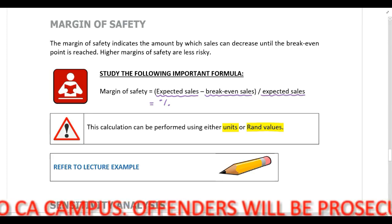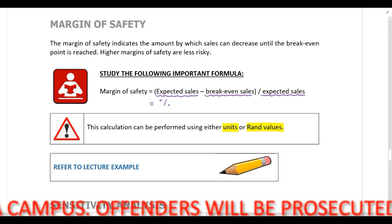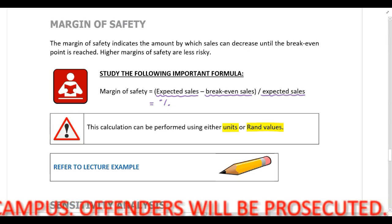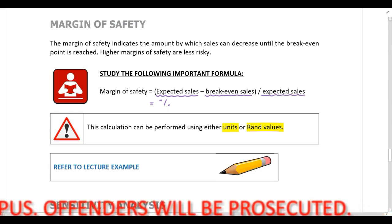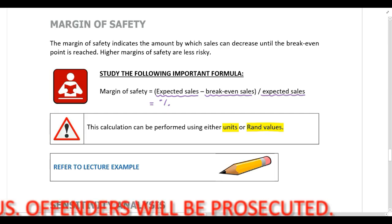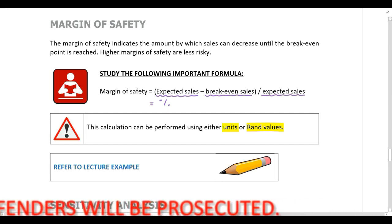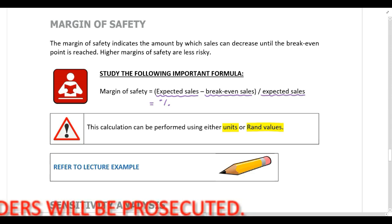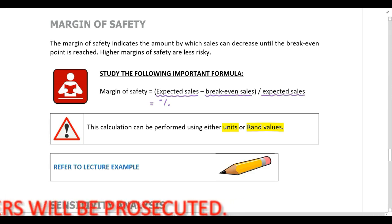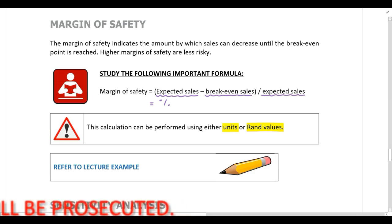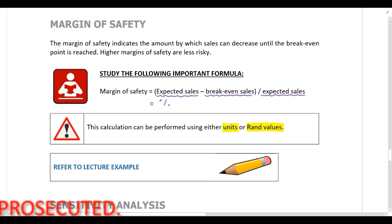If you're working with units, you take expected sales in units, deduct your break-even point in units, and divide by expected sales in units. On the other hand, if you're working with rand values, you take the rand value of your expected sales, deduct your break-even point in rands, and divide by the rand value of your expected sales.